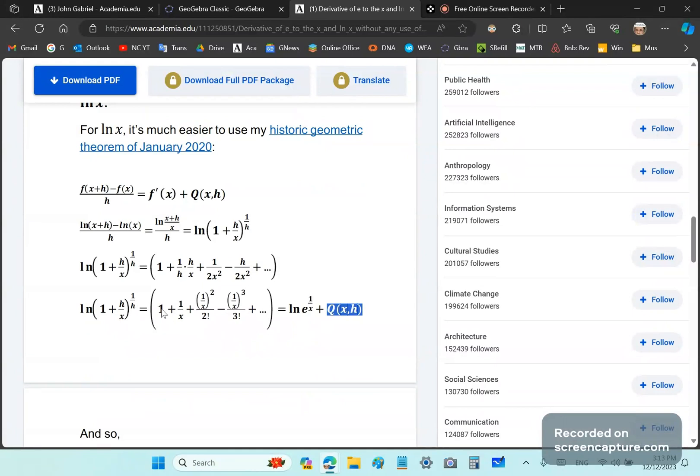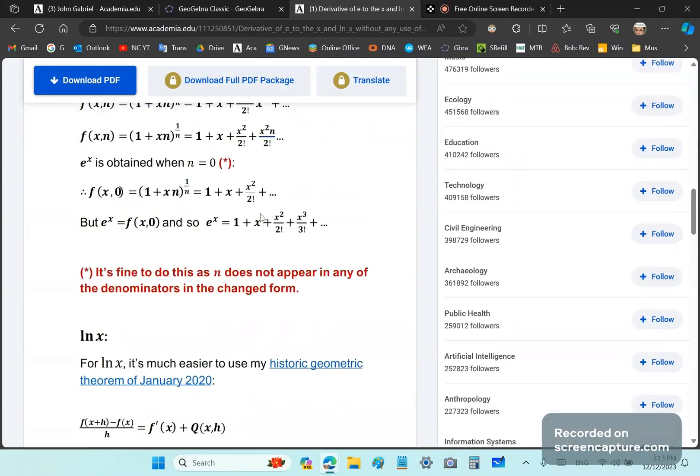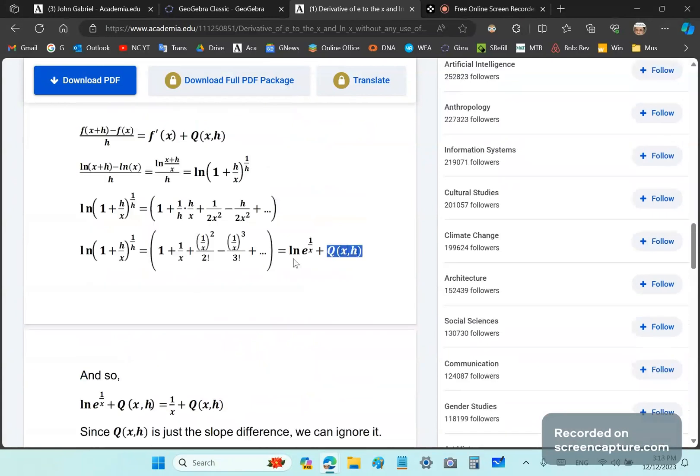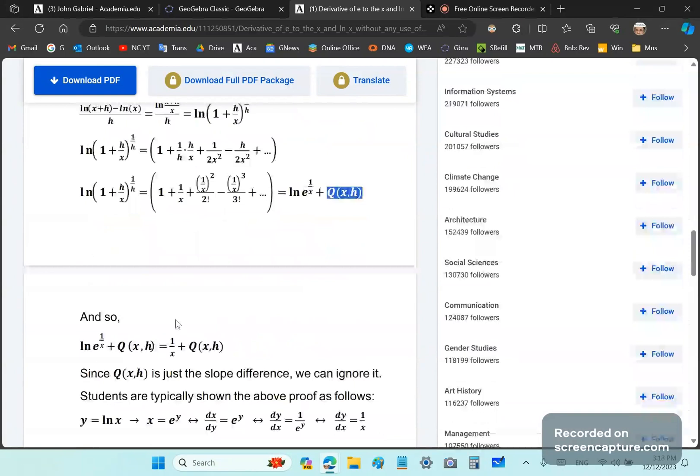We established that e^x is this, so if you put 1/x it's going to look like this, and hence we're going to end up with the derivative which is 1/x, as you see over here. Because log of e^(1/x) is 1/x plus the difference. Since q(x,h) is just a slope difference, we can ignore it.